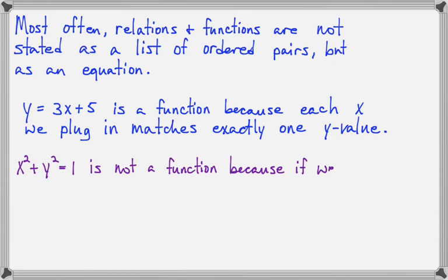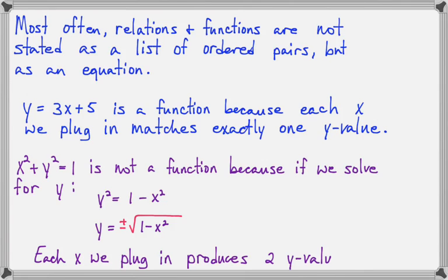But if we look at x squared plus y squared equals 1, that's not a function. And to see why it's not a function, you have to solve this for y. So that's what I'm about to do here. If I isolate the y squared term and do the square root of both sides, when I do the square root of both sides, it forces me to put in this plus-minus. You remember that from when we learned this square root property. And so every x value I plug in here is going to generate a positive y and a negative y. Each x we plug in produces two y values, and therefore this equation does not represent a function.